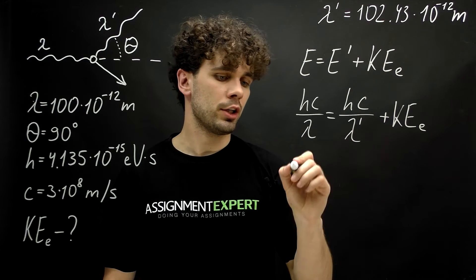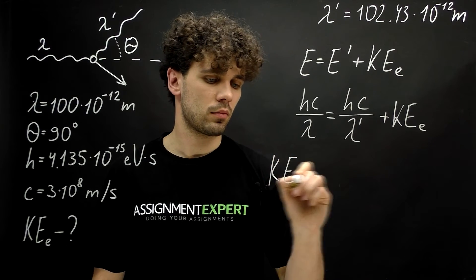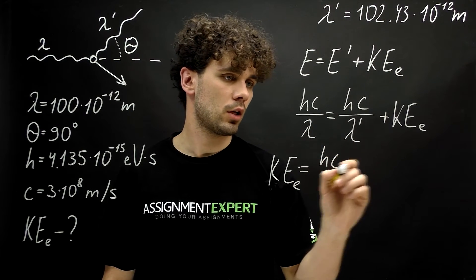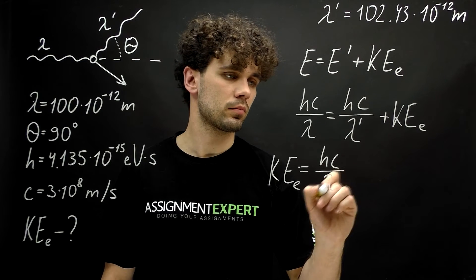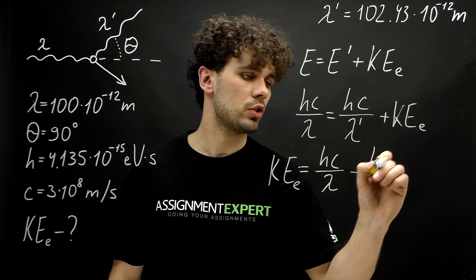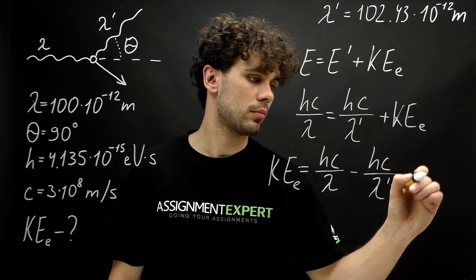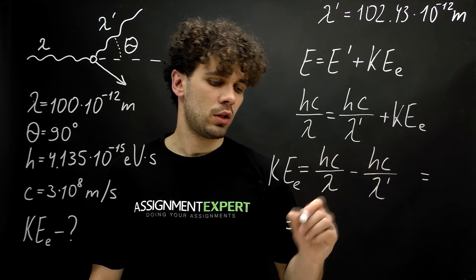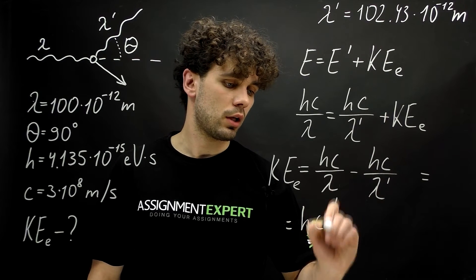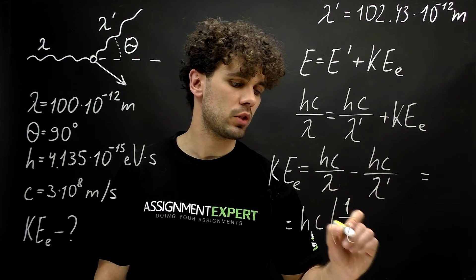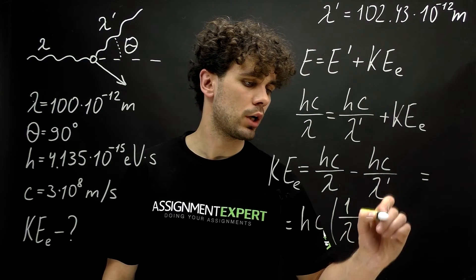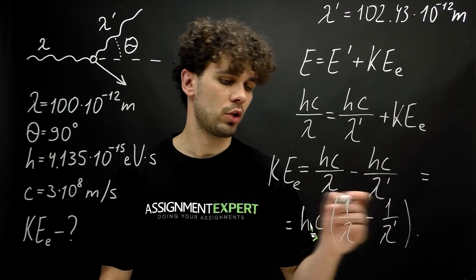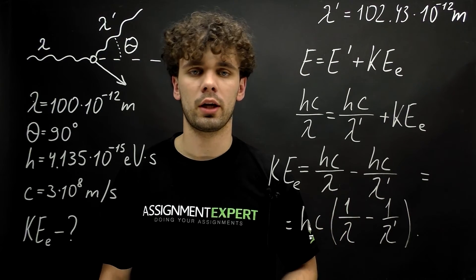And from here KE equals hc over lambda minus hc over lambda prime. Or we can move hc in front. And in braces we have 1 over lambda minus 1 over lambda prime. And from here we can find the kinetic energy of the recoiling electron.